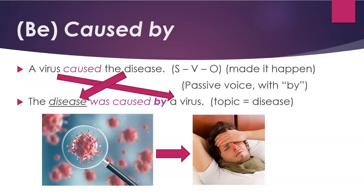Now with 'caused by,' it's a little different. For example, 'a virus caused the disease' follows the subject, verb, object pattern, meaning the virus made the disease happen. But if we change that to the passive voice, we use the word 'by': 'the disease was caused by a virus.' The topic of the sentence is now the disease, so we've switched the focus from virus to disease — we're looking at the effect. For the passive voice, we have another video, so we won't go into detail on how to form that here.